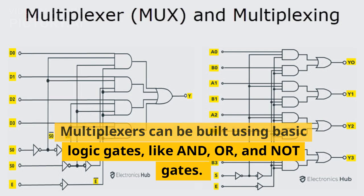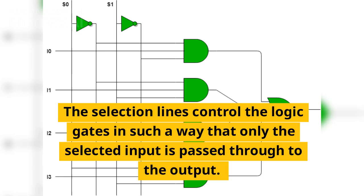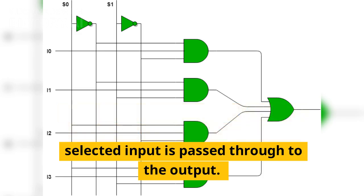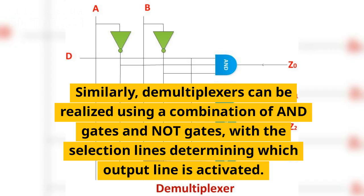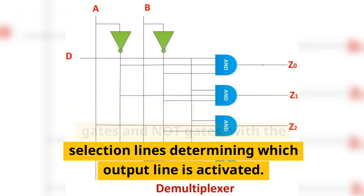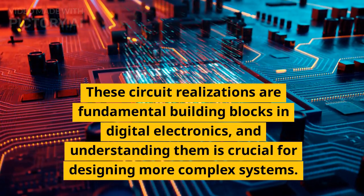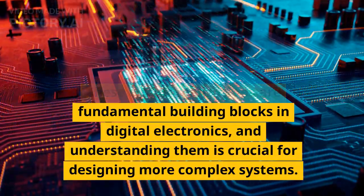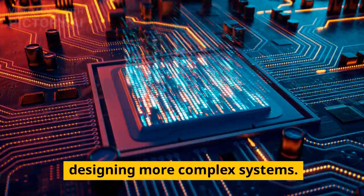Multiplexers can be built using basic logic gates like AND, OR, and NOT gates. The selection lines control the logic gates in such a way that only the selected input is passed through to the output. Similarly, demultiplexers can be realized using a combination of AND gates and NOT gates, with the selection lines determining which output line is activated. These circuit realizations are fundamental building blocks in digital electronics, and understanding them is crucial for designing more complex systems.